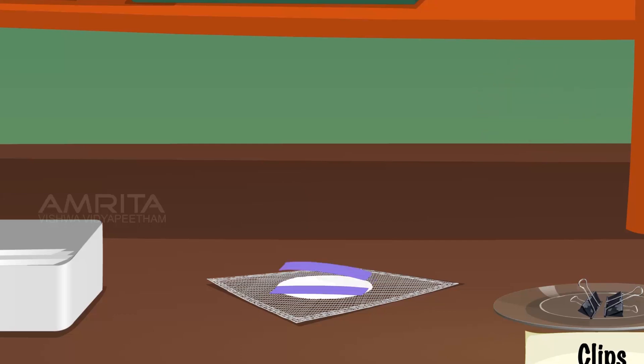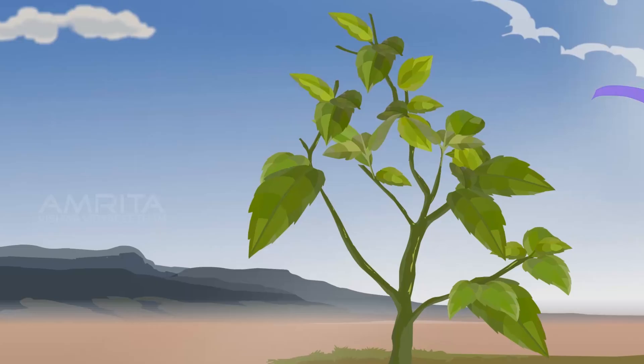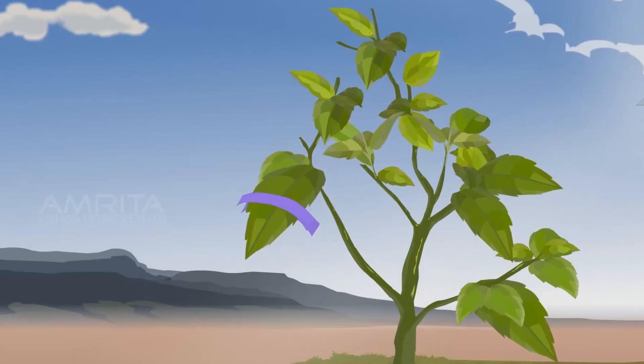Take the dry strips of cobalt chloride paper from the wire gauze. Select one healthy leaf from a potted plant. Place a dried strip of cobalt chloride paper on the upper and lower surface of the selected leaf.